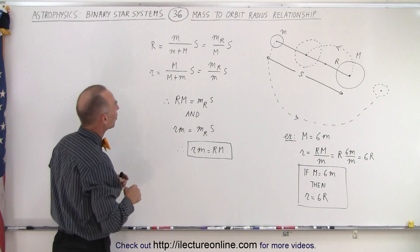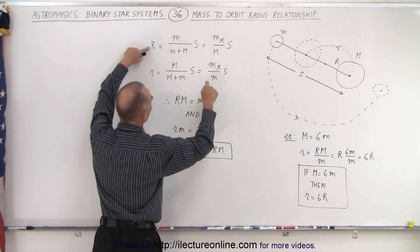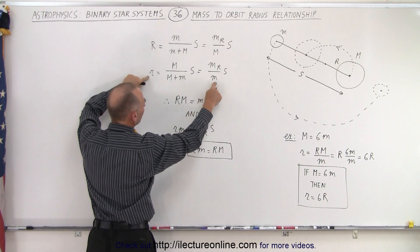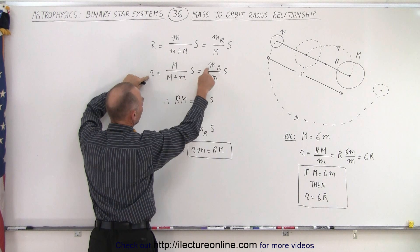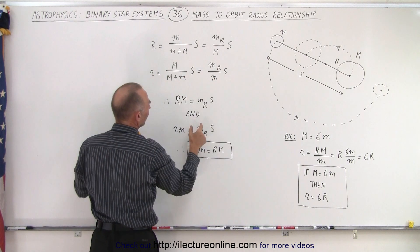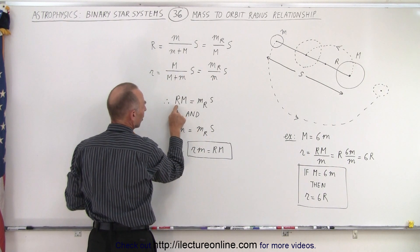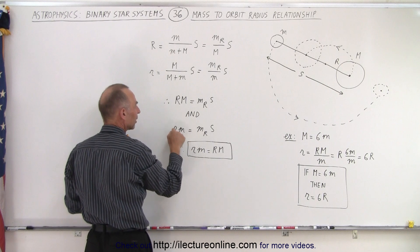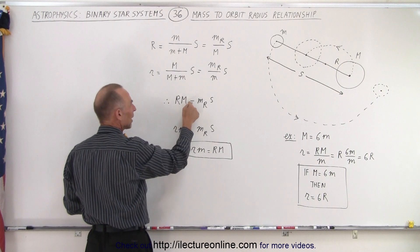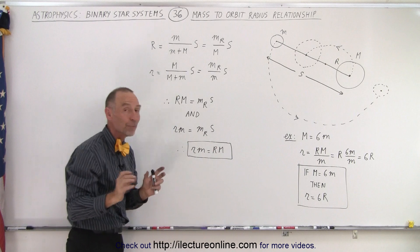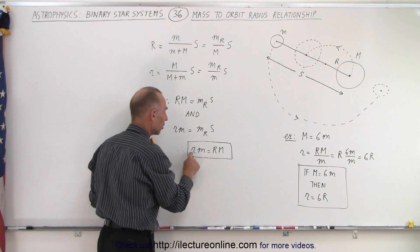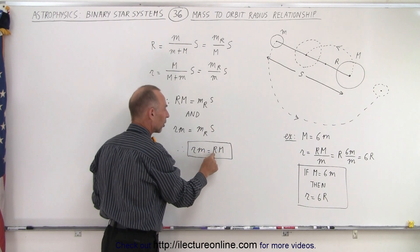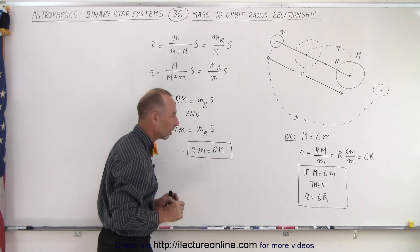If you multiply large R times large M, you get the reduced mass times s. And if you multiply small m times small r, you also get the reduced mass times s. So the product of large R times large M equals the product of small r times small m. The product of the radius and mass of the small object must equal the product of the radius and mass of the large object.